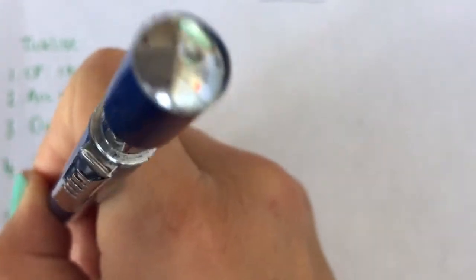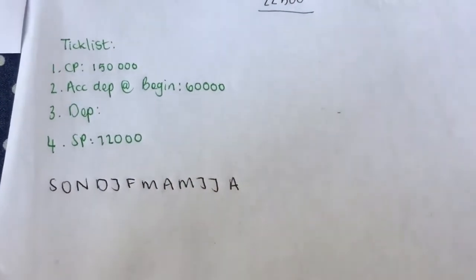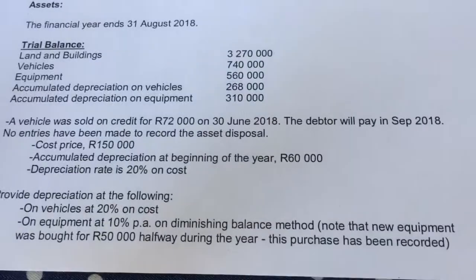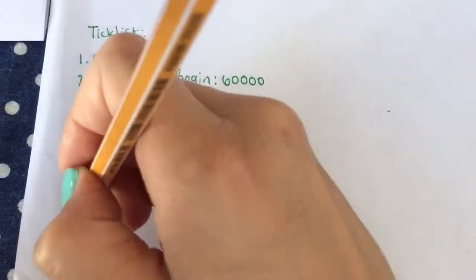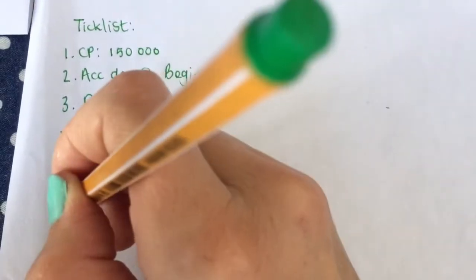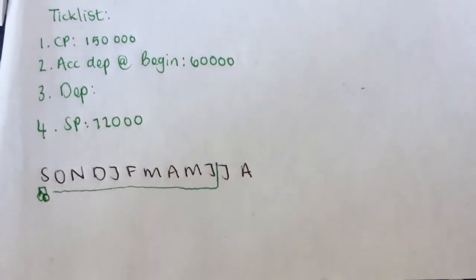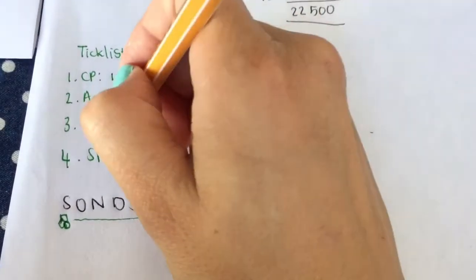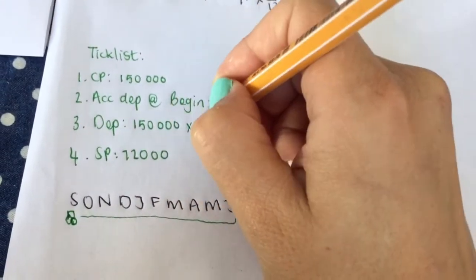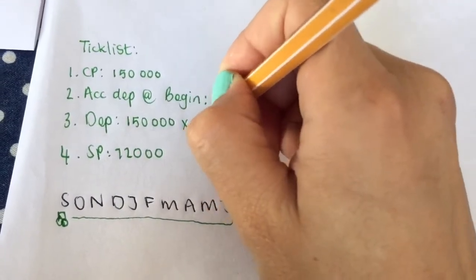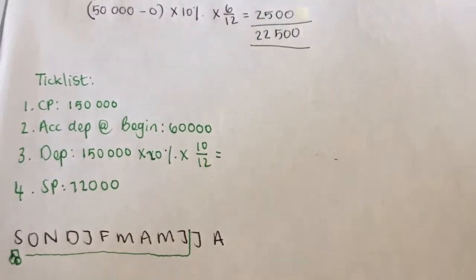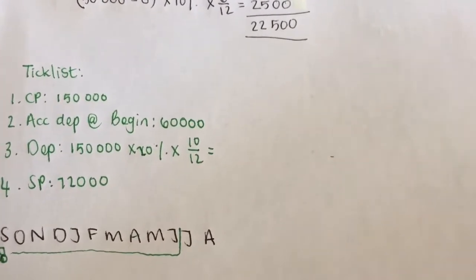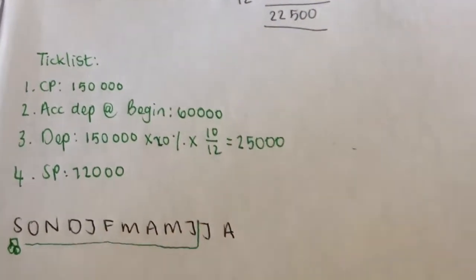Then I need to work out depreciation. My financial year is September, October, November, December, January, February, March, April, May, June, July, August, because they said it ends in August. When did I sell the car? I sold it on the 30th of June. So I drove around in my little green car all the way until the end of June. If I do that, I had it for 10 months. That's on cost, so I'm going to say 150,000 times 20 percent times 10 over 12.